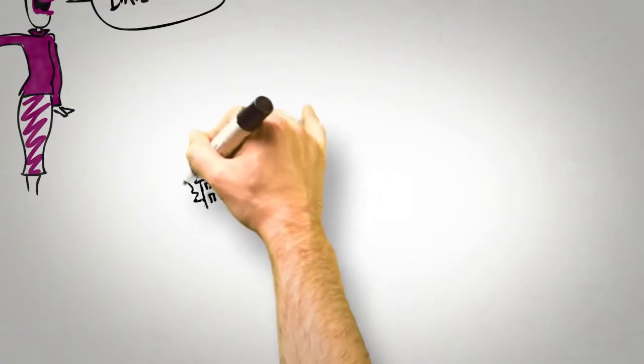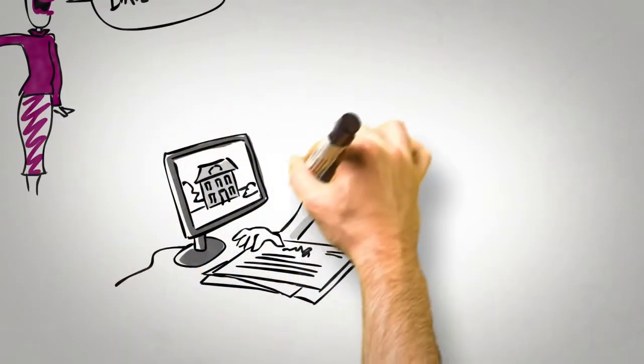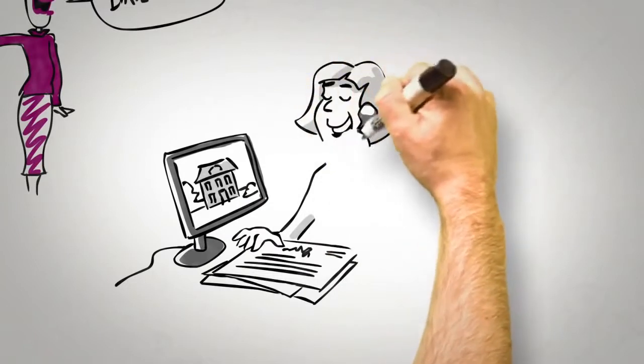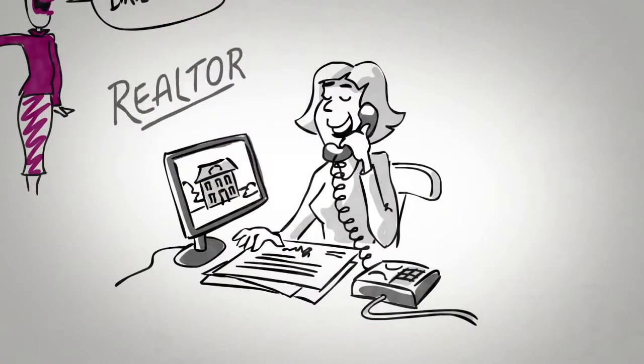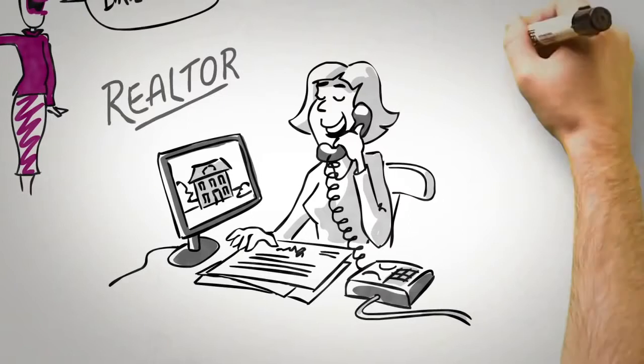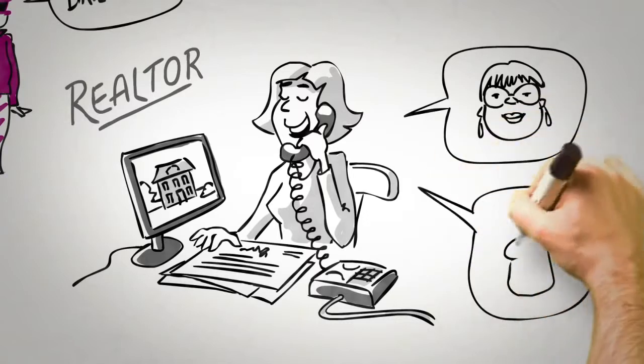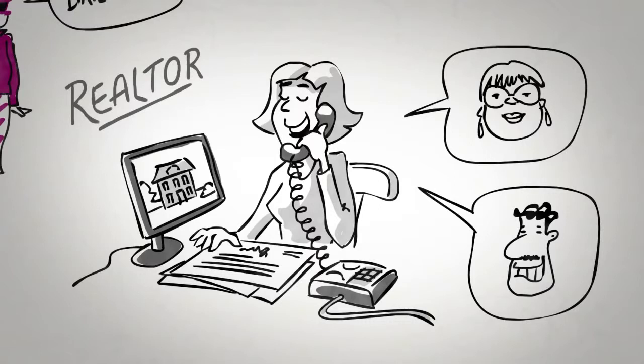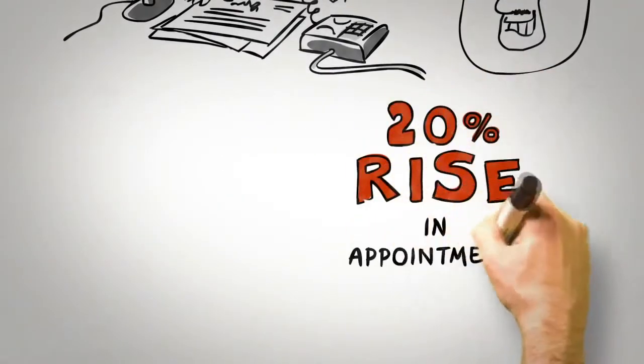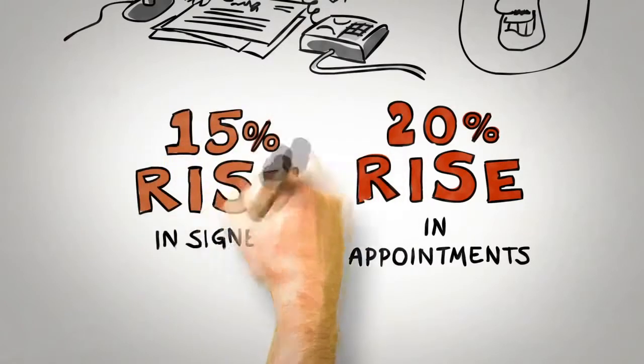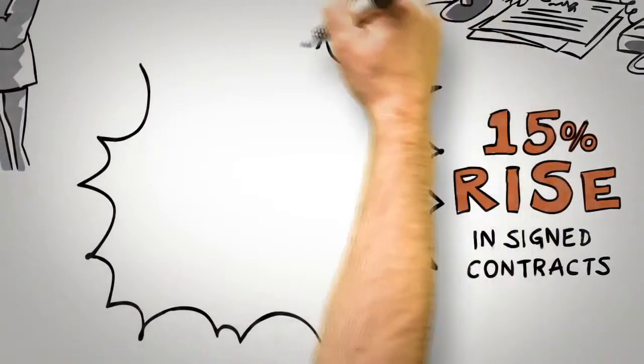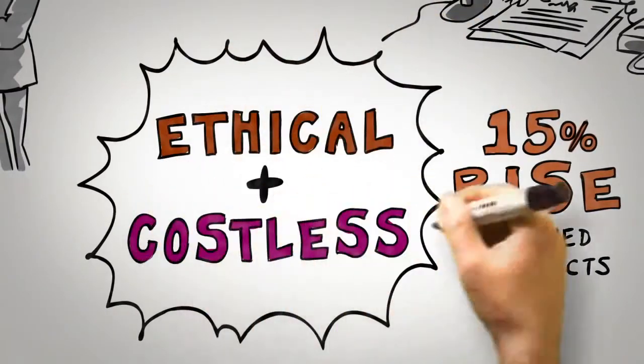One group of real estate agents were able to increase both the number of property appraisals and the number of subsequent contracts that they wrote by arranging for reception staff who answered customer inquiries to first mention their colleagues' credentials and expertise. So customers interested in letting a property were told, 'Lettings? Let me connect you with Sandra, who has over 15 years experience letting properties in this area.' Customers who wanted more information about selling properties were told, 'Speak to Peter, our Head of Sales. He has over 20 years experience selling properties. I'll put you through now.' The impact of this expert introduction led to a 20% rise in the number of appointments and a 15% increase in the number of signed contracts. Not bad for a small change informed from persuasion science that was both ethical and costless to implement.